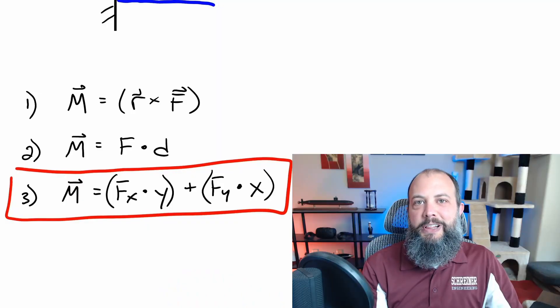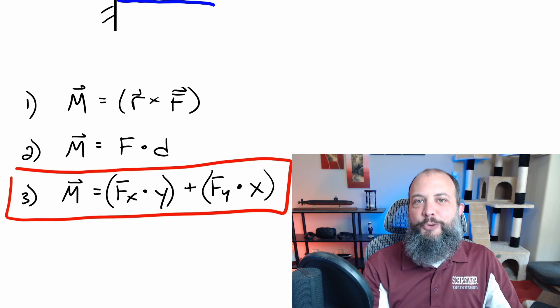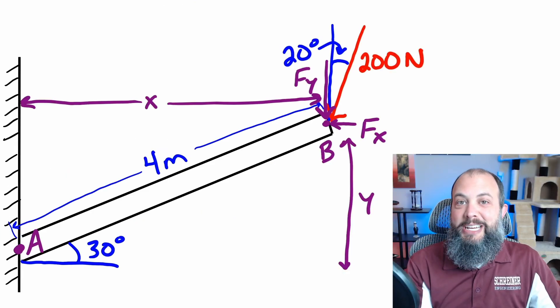And the reason I don't recommend those is because neither of those results in finding the X and Y components of that 200 Newton force, which if you want the reaction forces at point A, you're going to need the X and Y components anyway. Then you might as well do the scalar formulation method for finding the moment, which requires you to find the X and Y components of force and an X and Y component of your distance.